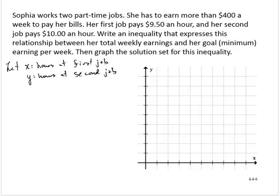Now Sophia earns $9.50 an hour at the first job, so then she would have 9.5 times x from the first job. The second job pays $10 an hour, so $10 times y. And she needs to earn a minimum of $400. She wants to earn more than $400, so we need that to be greater than $400.